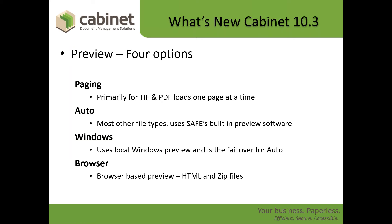The first thing you're going to notice in the new Cabinet 10.3 is Preview. We've expanded the number of options that we support for previewing documents to where now we have four different methods. The first one is Paging. This is ideal for situations where you have a low amount of bandwidth and you want to only download one page at a time into your preview versus the entire document.